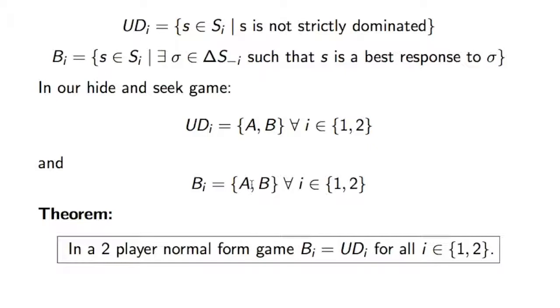And in fact, there's a very powerful theorem that states that in any two-player normal form game, B_i is equal to UD_i. But that doesn't generalize to games with more players. In fact, games with more players, the corresponding result simply states that B_i is contained in UD_i.